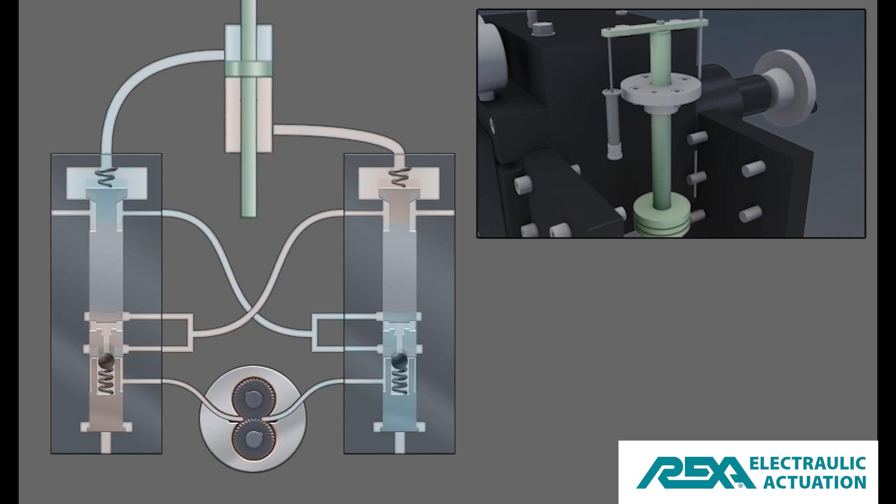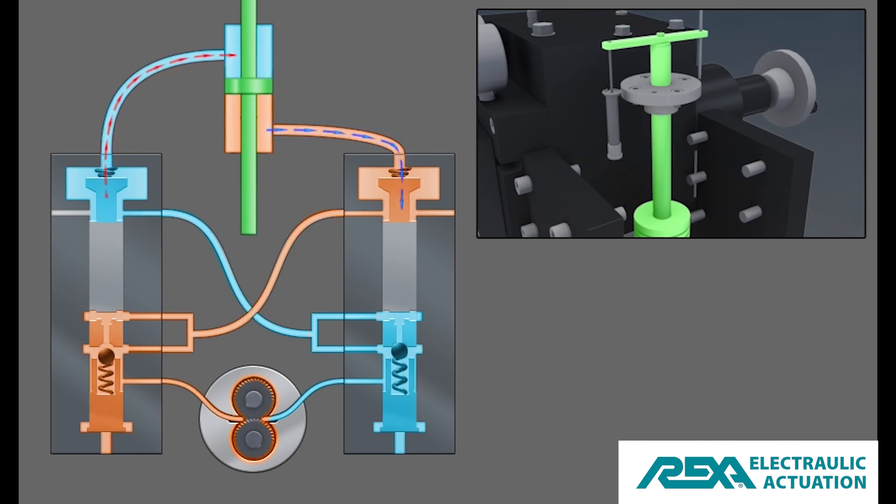If the valve was required to move in the other direction, the pump motor will start in the reverse direction, causing the flow circuit to reverse in the mirror image. The actuator will move the connected valve in the opposite direction.